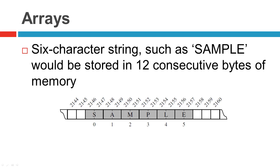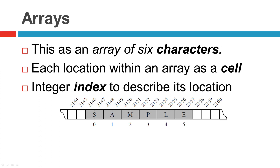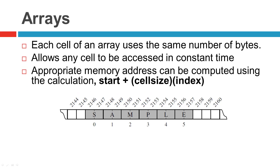Some basic terminology: we have an array of six characters, and each location within the array we call a cell. An integer index is used to describe its location. For example, the cell at index 4 has the contents 'L', and it's stored in bytes 2154 and 2155 of memory. Importantly, each cell of an array must use the same number of bytes, and this requirement is what allows any randomly accessed cell to be accessed in constant time based on its index.